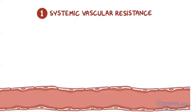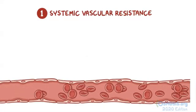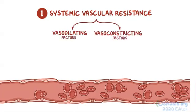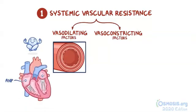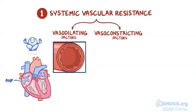Systemic vascular resistance is the resistance of systemic blood vessels to blood flow — in other words, how readily blood vessels allow blood to flow through them. It is mainly affected by changes in the vessel lumen, determined by vasodilating and vasoconstricting factors. Vasodilating factors, such as atrial natriuretic peptide (ANP), which is secreted by cardiac muscle cells in the walls of the atria in response to increased blood volume, relax smooth muscle cells within vessel walls, thereby widening the vessel lumen. This results in decreased systemic vascular resistance and therefore decreased afterload.